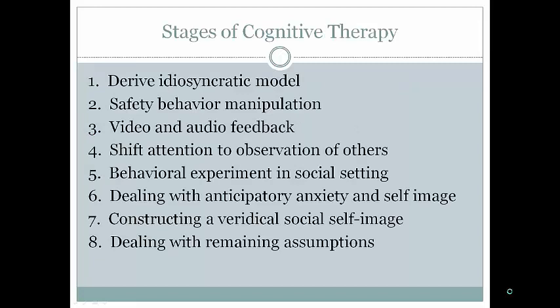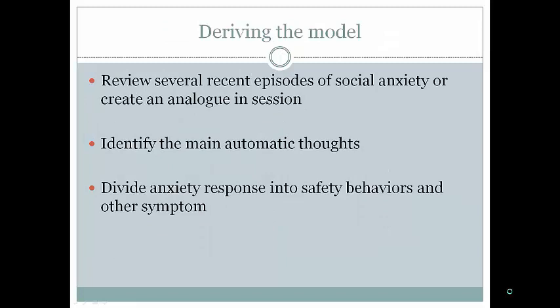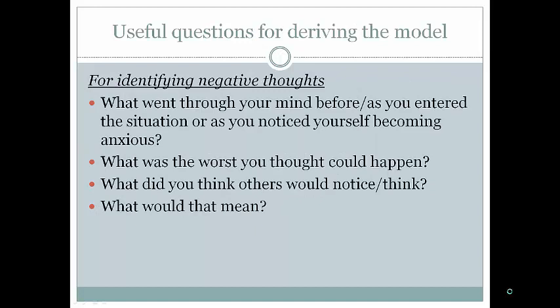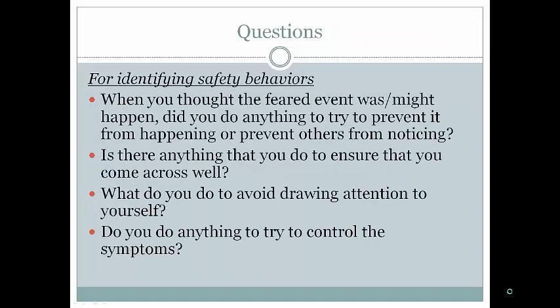Assessment measures specific to social phobia include the Social Phobia and Anxiety Inventory, Social Behavior Questionnaire, and Fear of Negative Evaluation Questionnaire. Cognitive therapy differs from CBGT in that it discusses the cognitive model and safety behaviors, uses video and audio feedback, shifts attention to observing others, gives behavior experiments in social settings, and deals with anticipatory anxiety and its impact on self-image, working toward constructing a more realistic self-image.